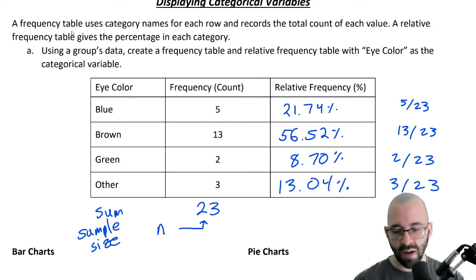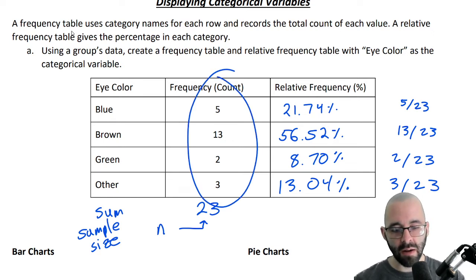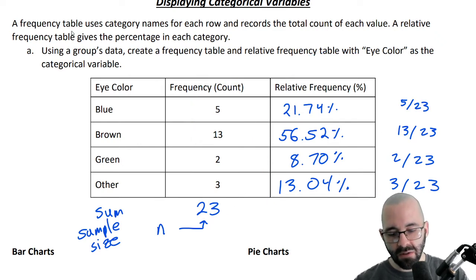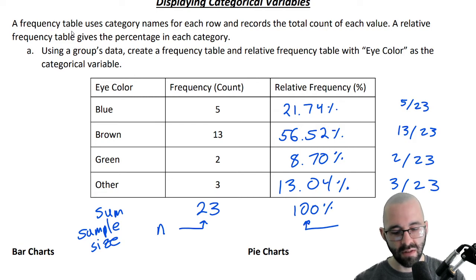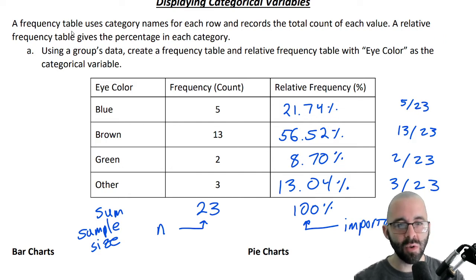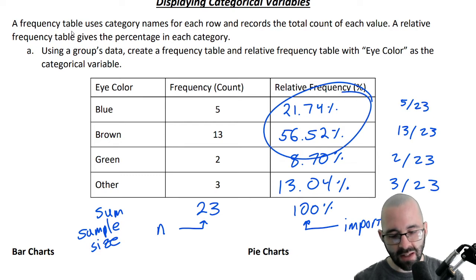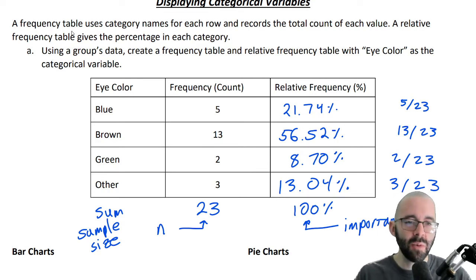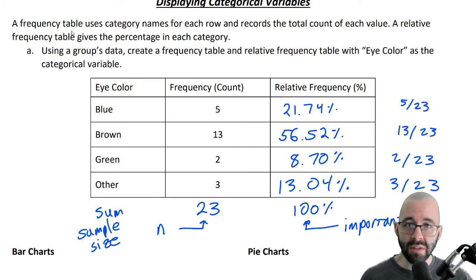When we look at these percentages, the frequency should add up to our sample size, and the relative frequency should add up to 100%. If it doesn't add up to 100%, we did something wrong. Eyeballing it quickly: 21 plus 56 is 77, plus 8 is about 85, plus 13 is about 98 — pretty close, and with the decimals it will add up to 100%, maybe barring some rounding error. That's a frequency table and a relative frequency table.